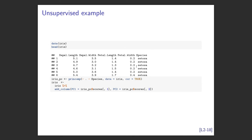A new classic example: the iris dataset. In the 1930s Fisher looked at irises - a type of flower - measured petal width and length plus the sepal measurements across species. The question is: can you use this information to work out the relationship between these measurements and species?